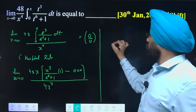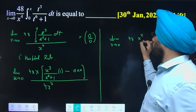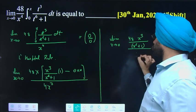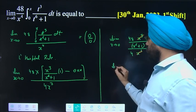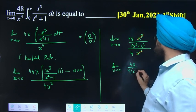Limit x approaches 0: 48x^3/(x^6 + 1) upon 4x^3. x^3 cancels. Remaining term: limit x approaches 0 of 48/[4(x^6 + 1)].